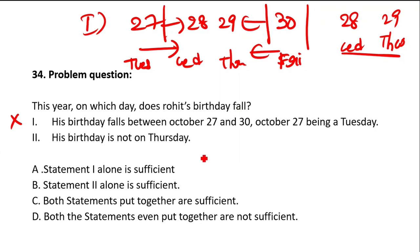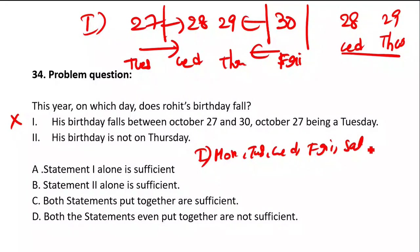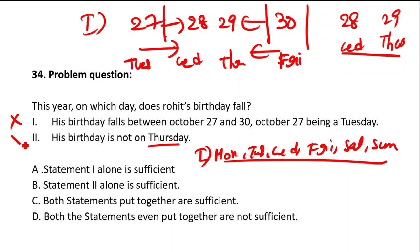Let's try solving with only the second statement. Second statement: his birthday is not on Thursday — it can be on Monday, Tuesday, Wednesday, Friday, Saturday, or Sunday. There are six possible days. So the second statement alone is also not sufficient. When solving with the second statement, don't mix in first statement information — solve only with second statement information. With second statement alone, you are not getting the answer.